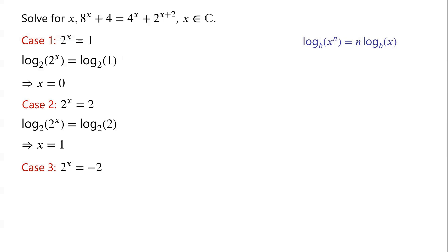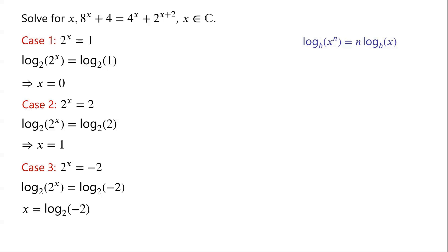For case 3, taking log to the base 2 of both sides, we have log base 2 of 2 to the power of x equals log base 2 of negative 2. Note that the logarithm of a negative number is undefined if the variable takes real numbers. However, logarithm of a negative number is defined when the variable takes complex numbers. Since log base 2 of 2 to the power of x equals x, we can write x equals log base 2 of negative 2.